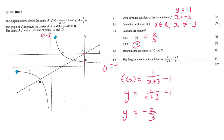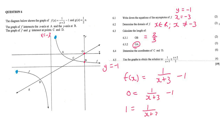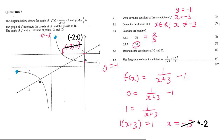The next question asks for the length of OA, from the origin up to A. You've got to ask yourself what is happening at A — that is the x-intercept of graph F. So we write down the equation of F and make y equal to 0, because that is how you find x-intercepts. Taking the 1 over and multiplying through by x plus 3, you find that x equals negative 3. The coordinates are negative 3 and 0, but the length is positive 3.